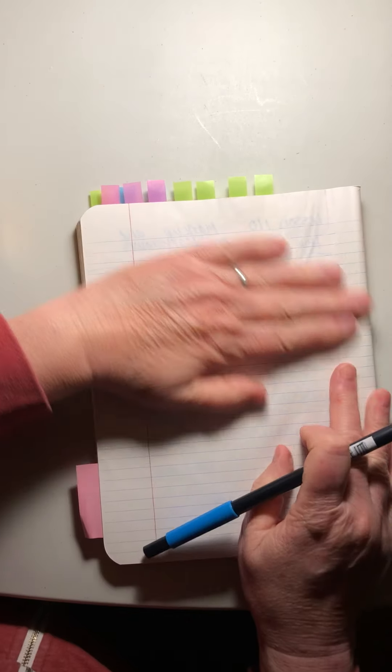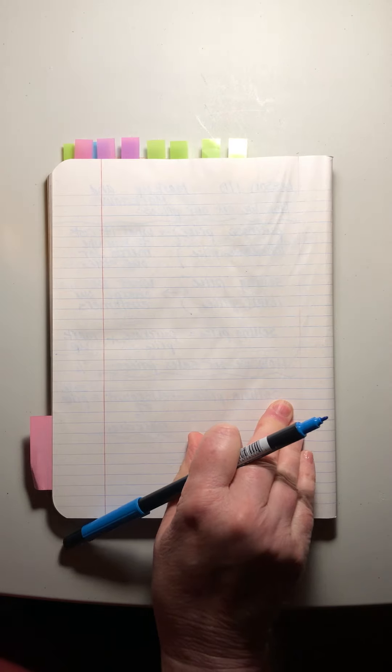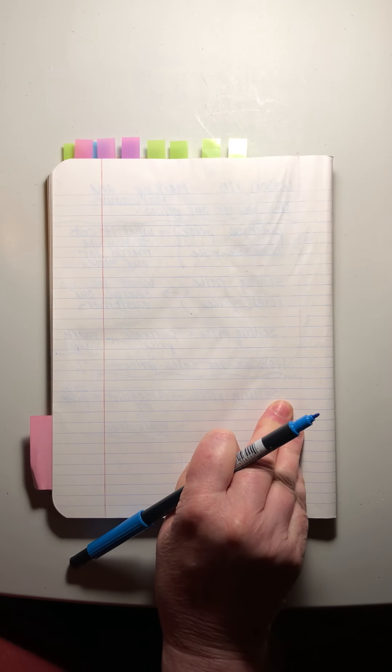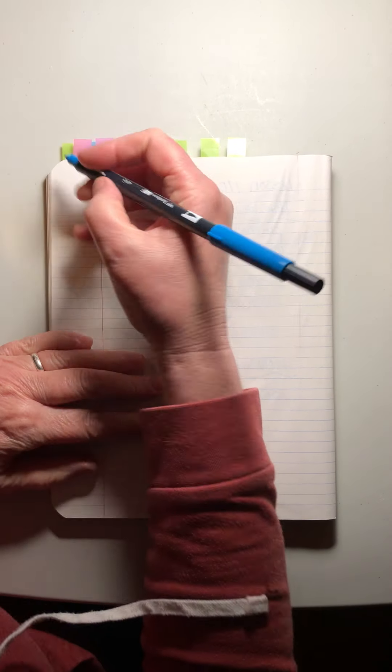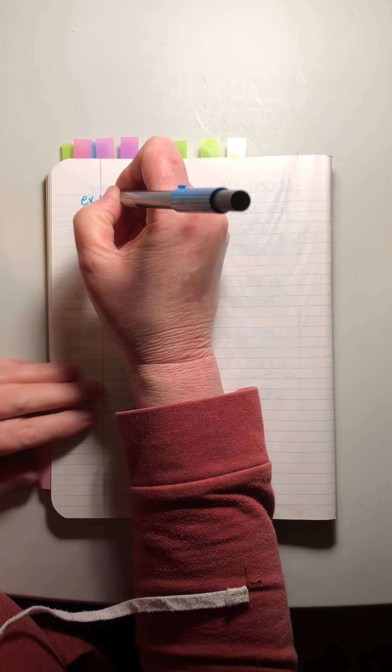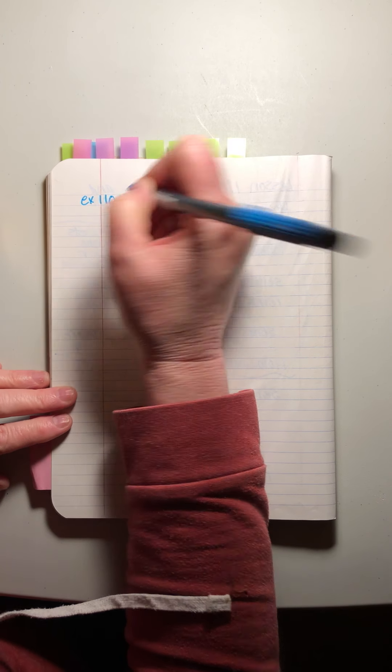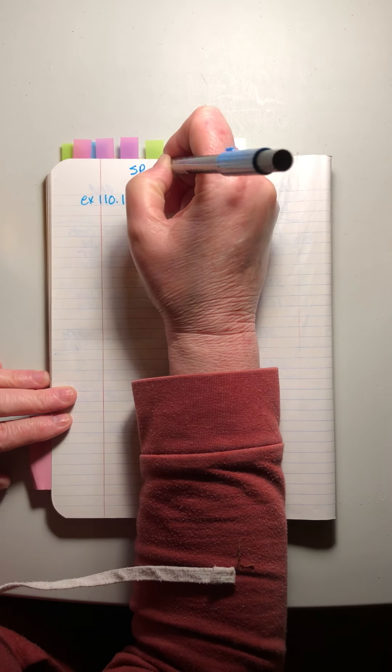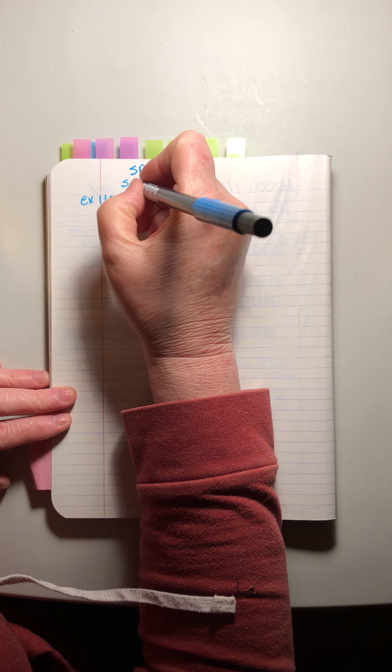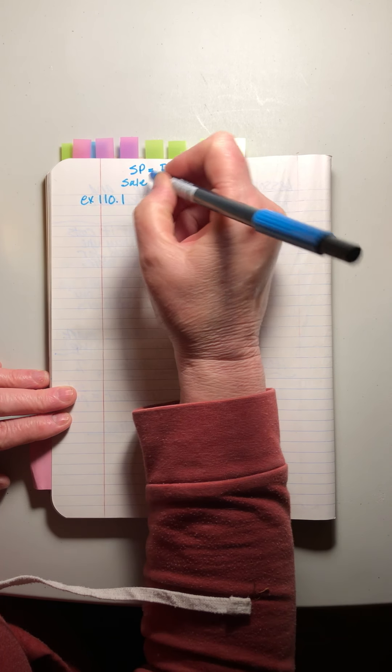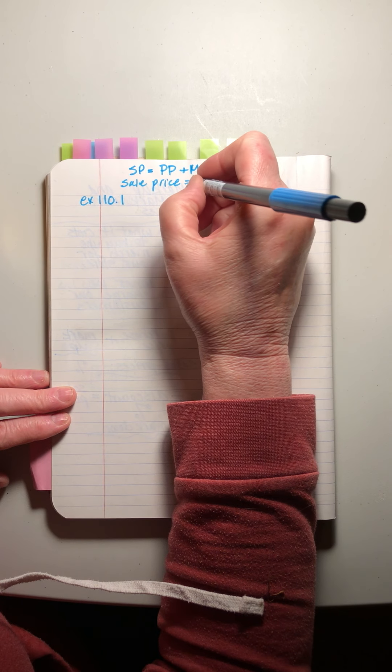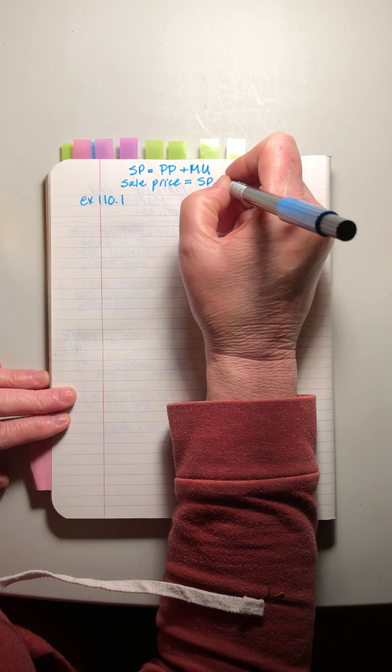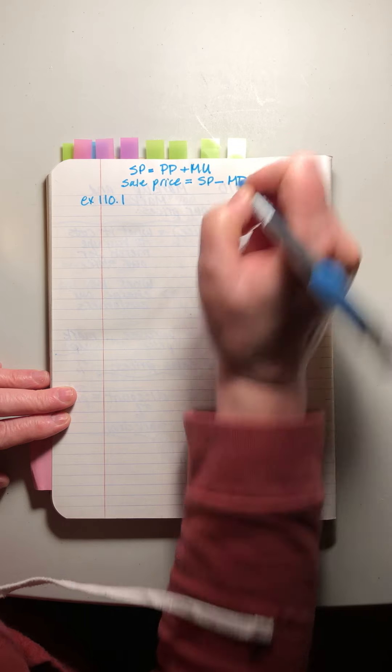Okay, first problem. I'm going to write here: selling price equals purchase price plus the markup. And I'm going to write: sale price equals the selling price minus the markdown or discount.